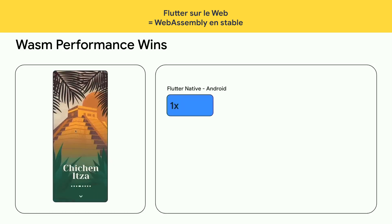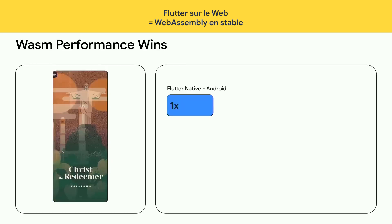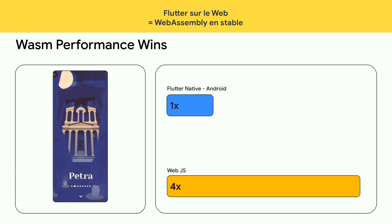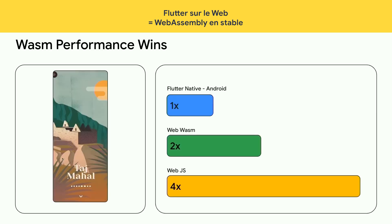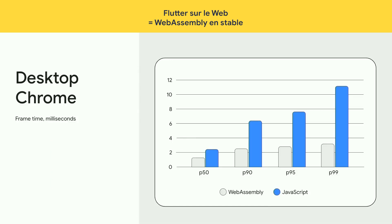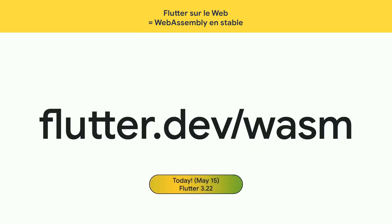We took this app and ran it in JavaScript and compared how long frames take to render. In JavaScript, it's about 4x. When you compile to WebAssembly, we cut it to less than half. At the 50th percentile — say we render 10,000 frames — the median frame time with WebAssembly is about twice as fast as JavaScript. So not only is WebAssembly faster, it's more consistently fast, especially in the most demanding frames. This is available today in Flutter 3.22.